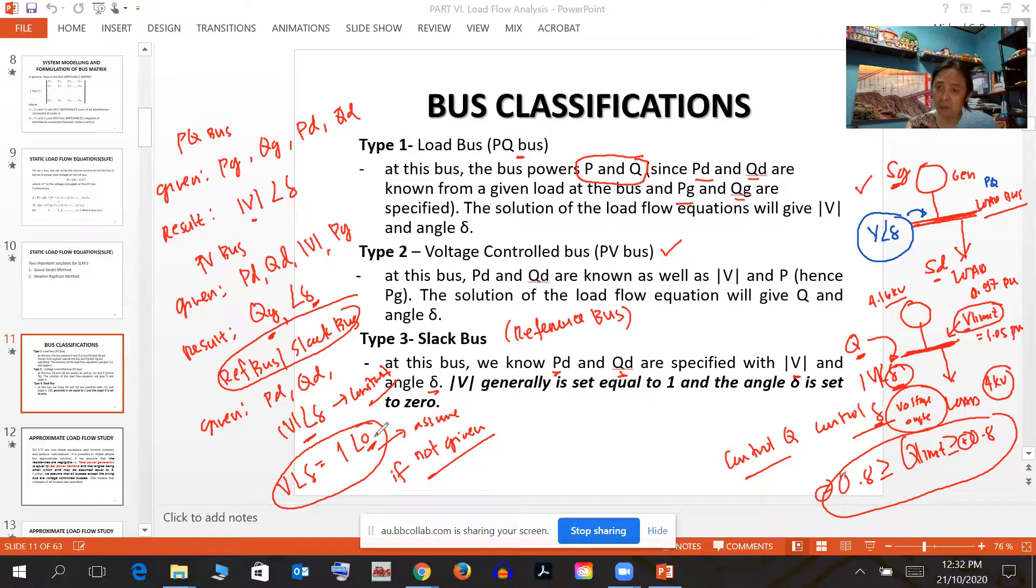If you have a load flow algorithm, you cannot continue without any reference. If you recall our balanced three-phase system, you cannot compute anything without a reference. That's why we always make sure we have the reference for balanced quantities. In unbalanced systems, we use a different reference unless stated.